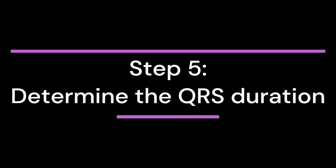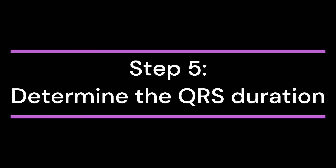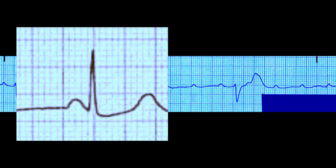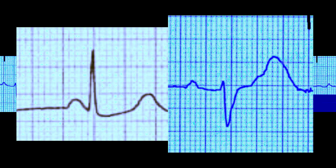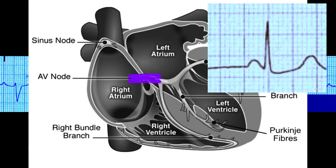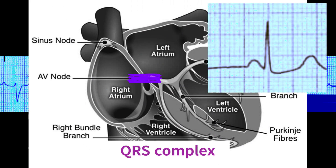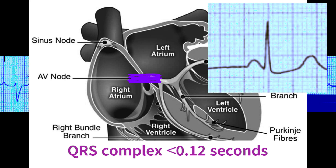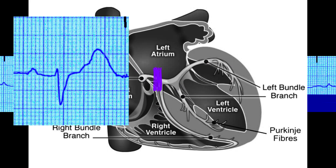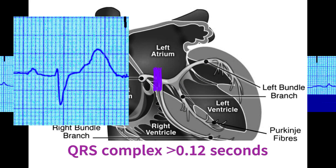Step 5: Determine the QRS Duration. In a third-degree heart block, the QRS complex can be narrow or wide. The QRS duration will be normal — less than 0.12 seconds — if the block is located in the AV node. However, if the block is located below the AV node, the QRS duration will be widened, with a duration of more than 0.12 seconds.